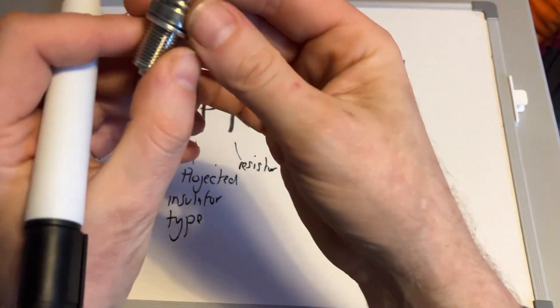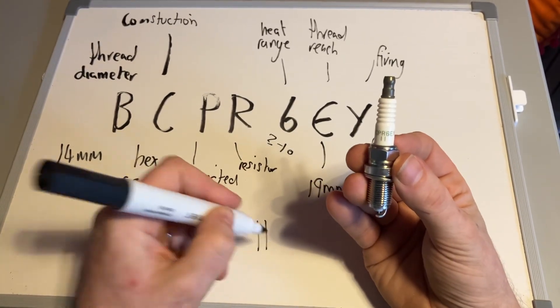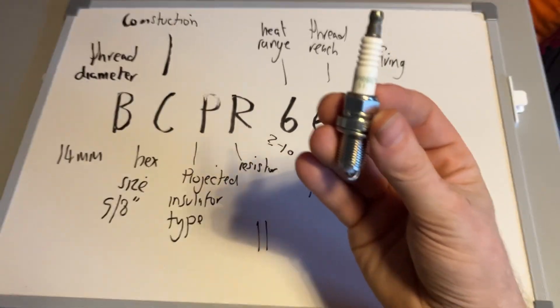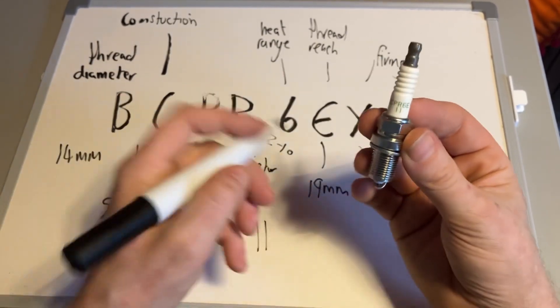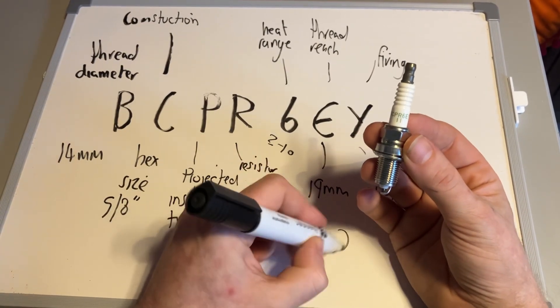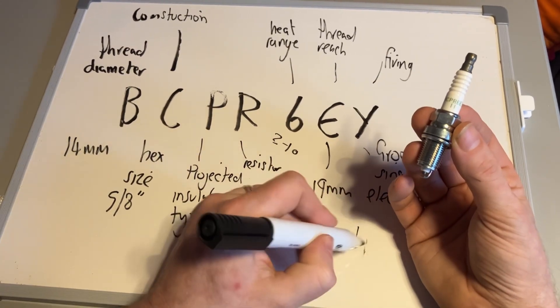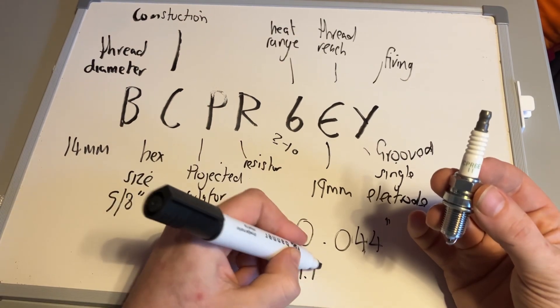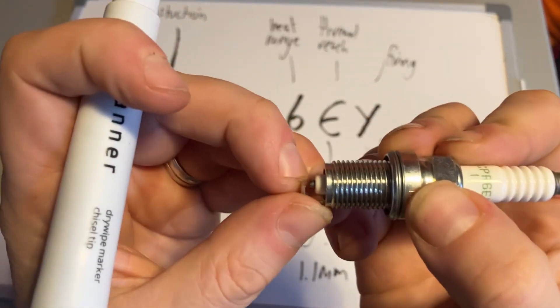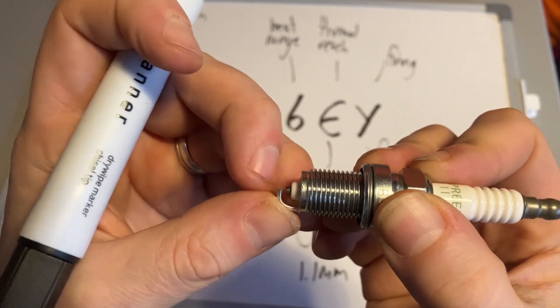The one other piece of information you get on there, in this particular one, is 11. So 11 in this case is to do with the gap size. If I cross-reference this with the NGK website, it shows 0.044 of an inch, which is 1.1 millimeters. That's actually telling me the gap that I need between the electrode and the spark plug tip.